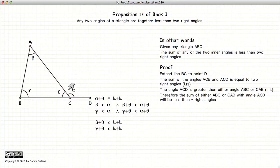So from Proposition 16 we know that beta is less than the angle alpha. So we have beta is less than alpha, we add theta to both sides of the equation, we get beta plus theta is less than alpha plus theta.